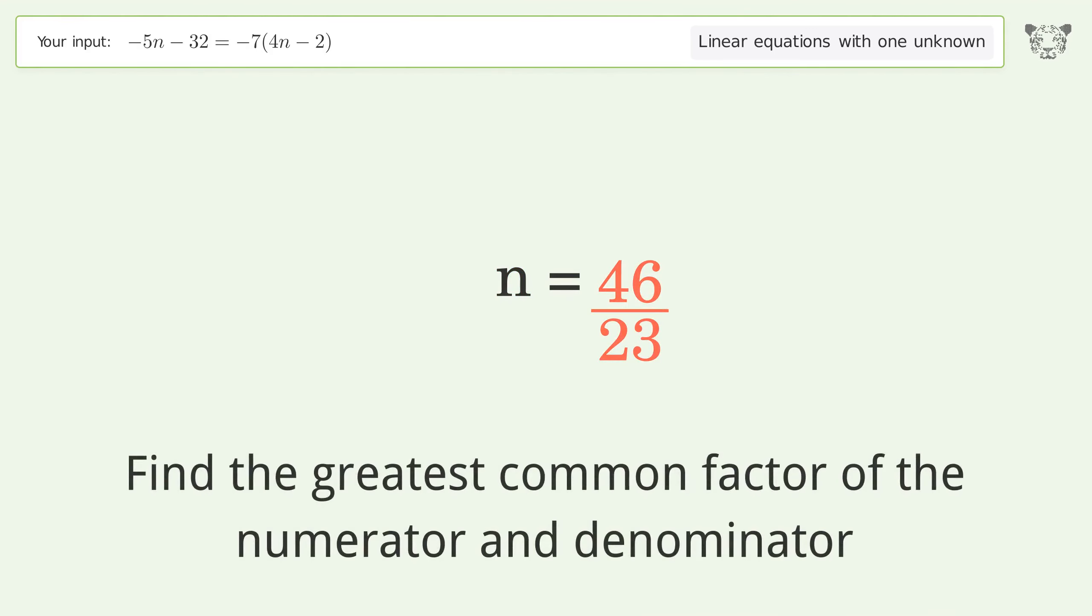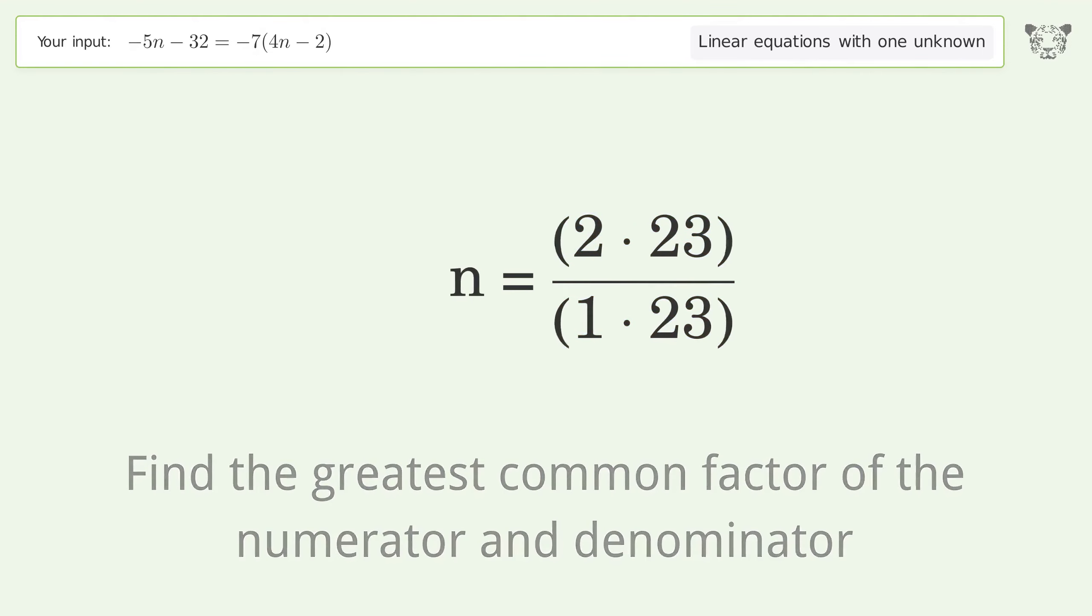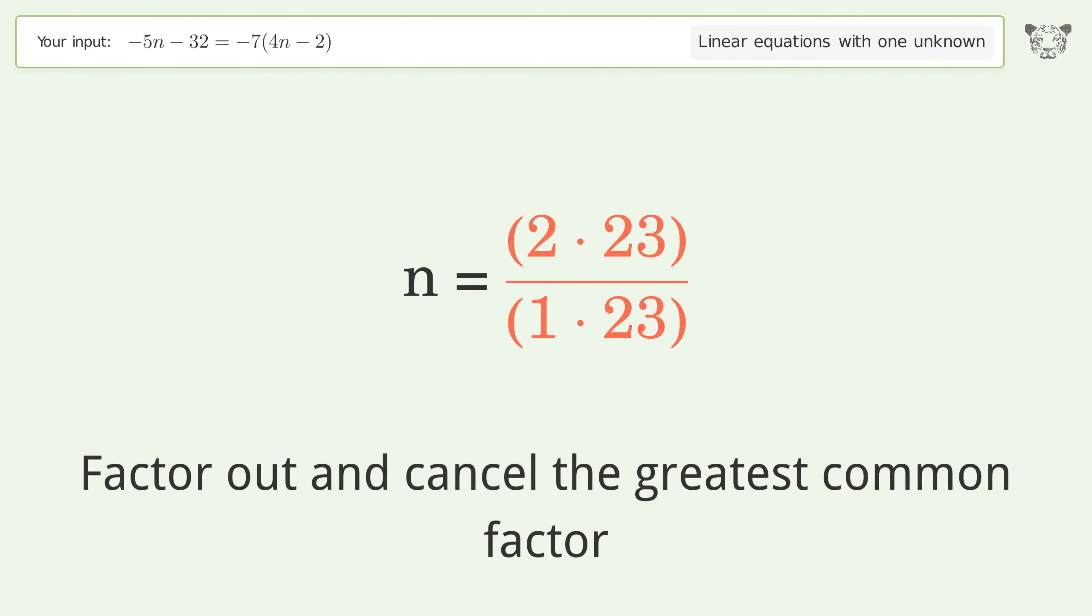Find the greatest common factor of the numerator and denominator, then factor out and cancel the greatest common factor.